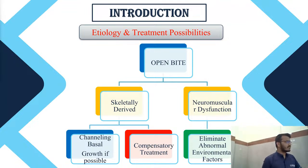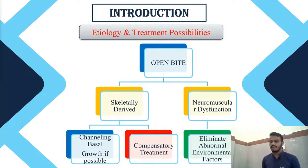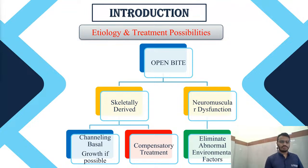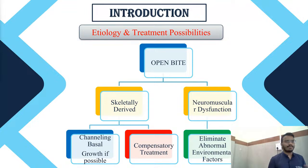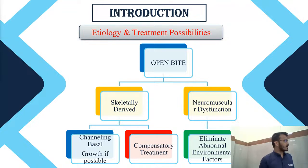Taking the example of open bite: open bite can be caused by two causes — either skeletally derived or neuromuscular dysfunction. When open bite is caused skeletally, we need to understand which stage the child is in. If growth is still yet to be accomplished, we can channel the basal bone and treat the skeletally derived open bite. Once growth is completed, we can go for compensatory treatment. Whereas neuromuscular dysfunction, which is mainly of dental alveolar origin, requires elimination of the abnormal environmental factors causing the open bite. Hence, to determine whether to go for fixed or removable, or functional or non-functional treatment, we need to turn to cephalometrics.